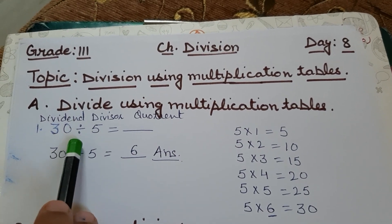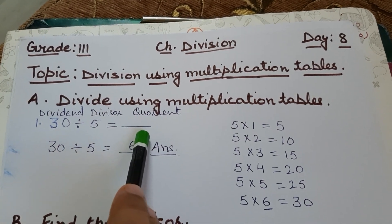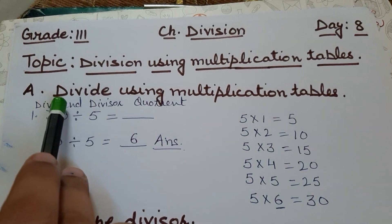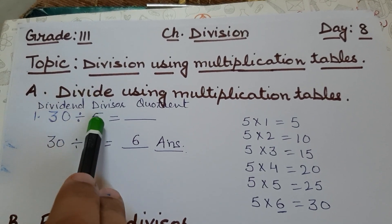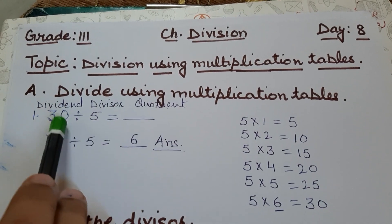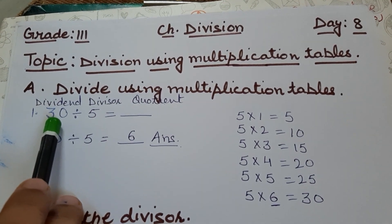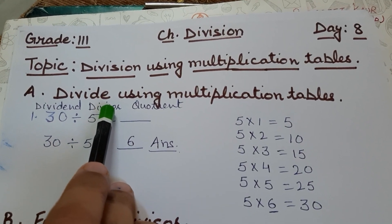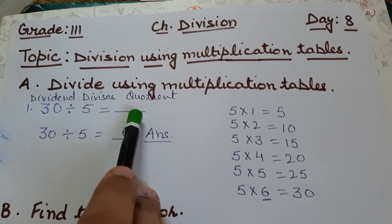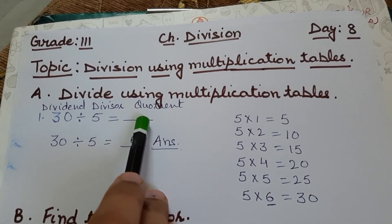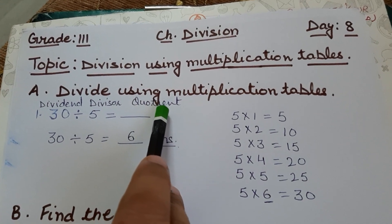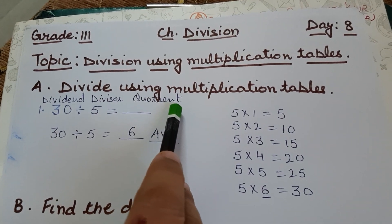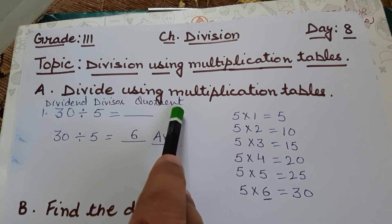The sum given is 30 divided by 5 equals what. Students, remember that this term is called the dividend and this term is called the divisor. The number which is to be divided is called the dividend, and the number with which we are dividing is called the divisor. The number we are supposed to find is called the quotient.